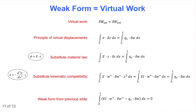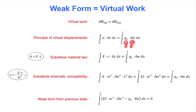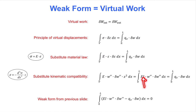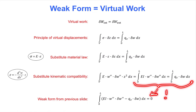The next slide starts with the principle of virtual work — specifically the principle of virtual displacements. Notice the volume integral of real stress times virtual strain on the left-hand side, and the integral of real load times virtual displacement on the right-hand side. Next, we substitute material law for sigma, and thereafter we substitute kinematic compatibility for both the real strain and the virtual strain. We also carry out the cross-section integration, which means integrating z-squared over the cross-section, giving the moment of inertia. If we compare the result with the weak form from the previous slide, we see that the expressions are identical. This proves that the weak form is actually the virtual work form of the boundary value problem.